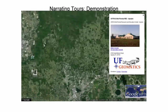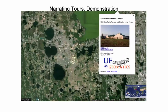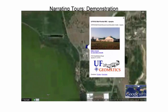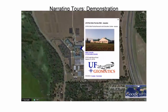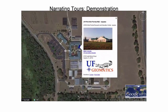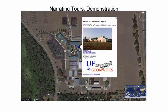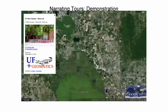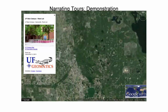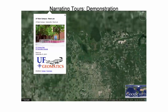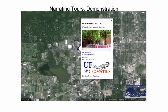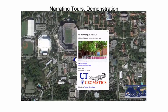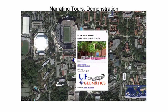Heading north, the Geomatics program has a presence in the Greater Orlando area at the Mid-Florida Research and Education Center in Apopka. Lastly, we arrive at Reed Lab, the Gainesville residence for the University of Florida Geomatics program, just south of Ben Hill Griffin Stadium. The UF Main Campus has been home to the Geomatics program since its inception in 1973.